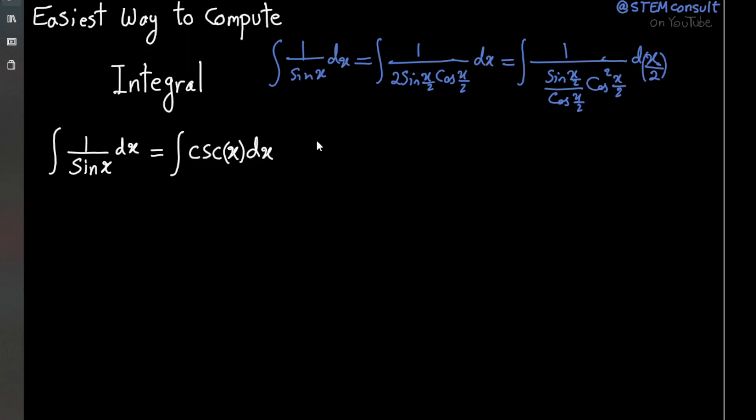Now let's just simply change a variable, x over 2, change it to variable u, so our integral becomes integral 1 over sine x over 2 cosine, divide by cosine x over 2 is just simply tangent, tangent u, and this becomes cosine squared u, and of course du.